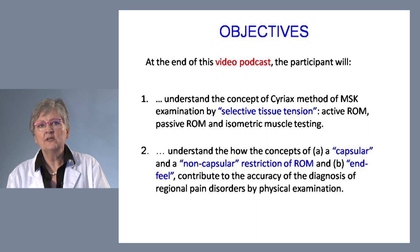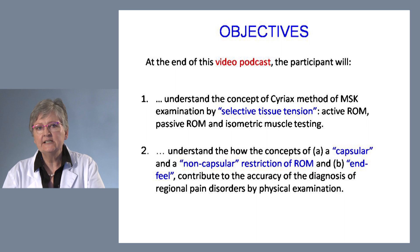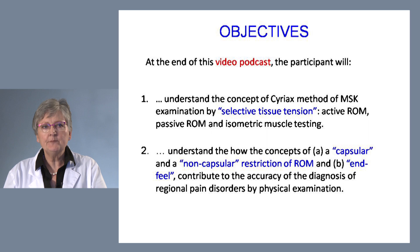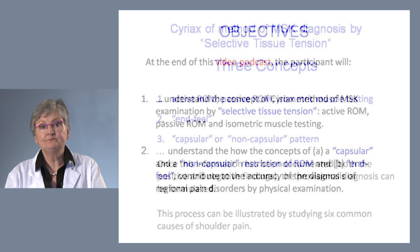The objective of this video podcast is to give some understanding of the concept of the Cyriax method of musculoskeletal examination by selective tissue tension, which involves active range of motion, passive range of motion, and isometric muscle testing. Secondly, to understand how the concepts of a capsular or non-capsular restriction of range of motion and end feel contribute to the accuracy and diagnosis of regional pain disorders by physical examination.